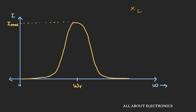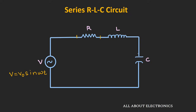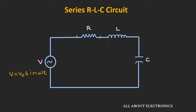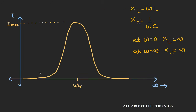We know that XL = ωL and Xc = 1/(ωC). At ω = 0, this Xc term will be infinity and XL will be 0, so the capacitor will act as an open circuit and hence you will not find any current. Similarly, at ω = infinity, this XL term will be infinity, so the inductor will act as an open circuit and again you will not find any current flowing. That is the reason at lower and higher frequencies the current is minimum. While at resonant frequency, the value of XL equals Xc, and hence the impedance of the circuit is purely resistive, where you find the maximum current flowing through the circuit.